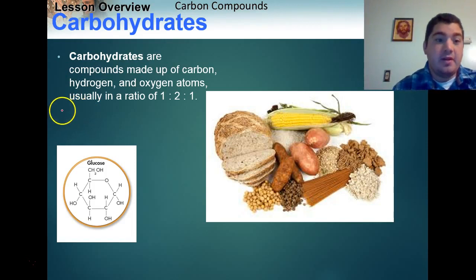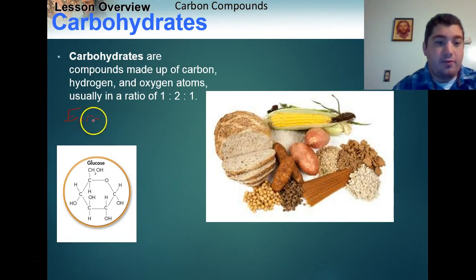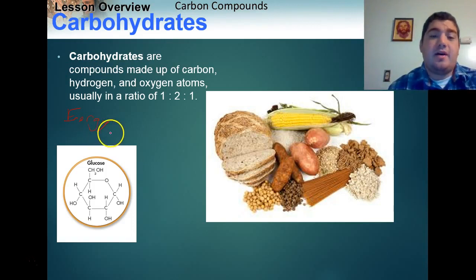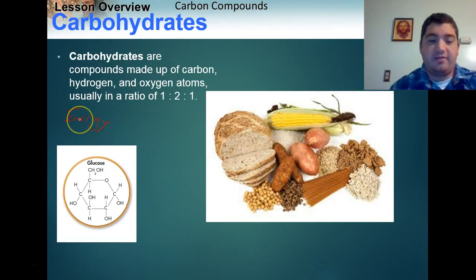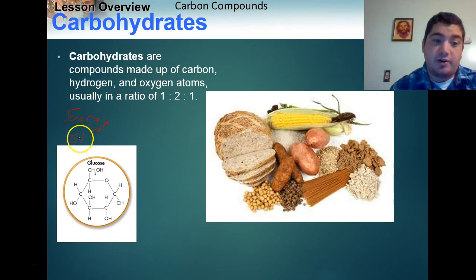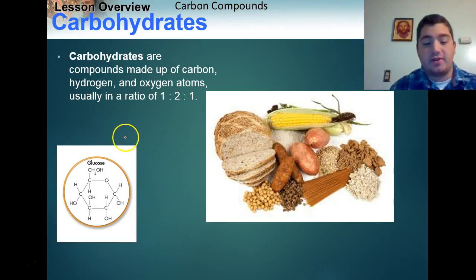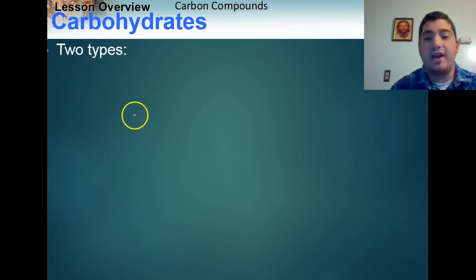Carbohydrates have two purposes. The first, and one of the more major ones, is energy. Before a long marathon run, you'll do a carb load the night before — eat lots of carbs to have lots of energy. The other use of carbohydrates is structure. Plants use carbohydrates for structure. There are two types of carbohydrates: the first is monosaccharides.